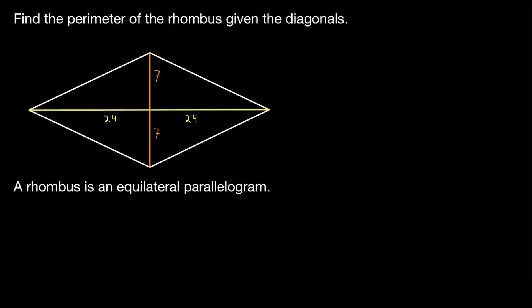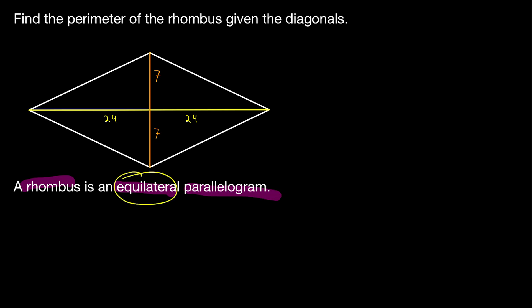When doing geometry, it's really important to remember your definitions. The first thing we want to remember is the definition of a rhombus. A rhombus is an equilateral parallelogram — a quadrilateral whose opposite sides are parallel to each other, and being equilateral means that all four of its sides are congruent. Since it's equilateral, we say all of its sides have a length of s, and write that in our diagram.